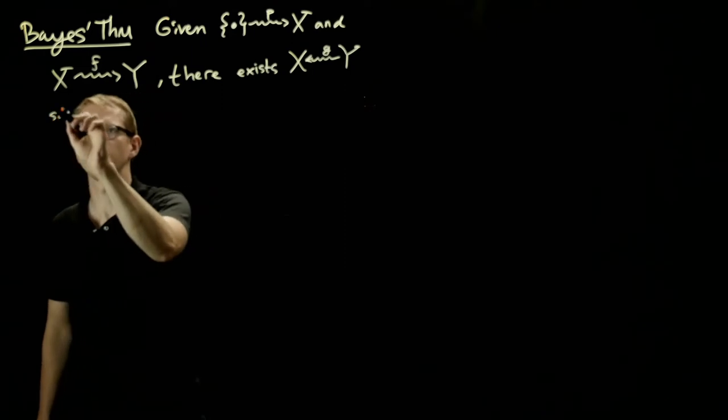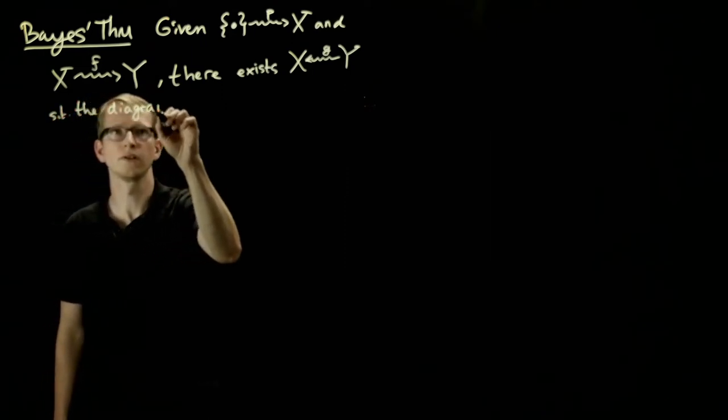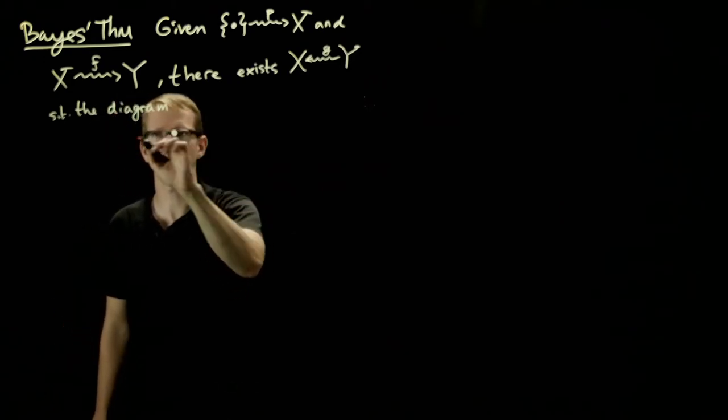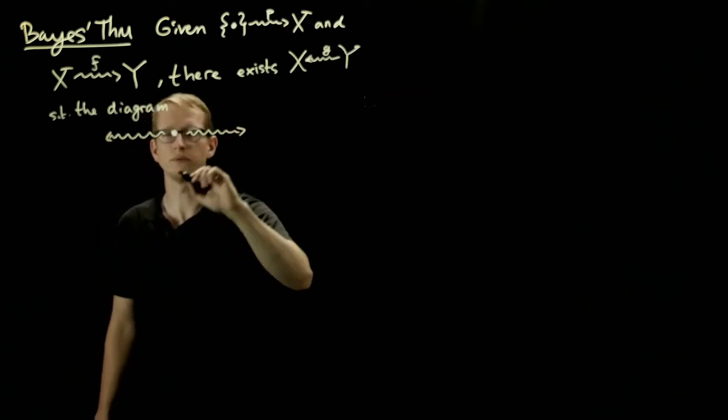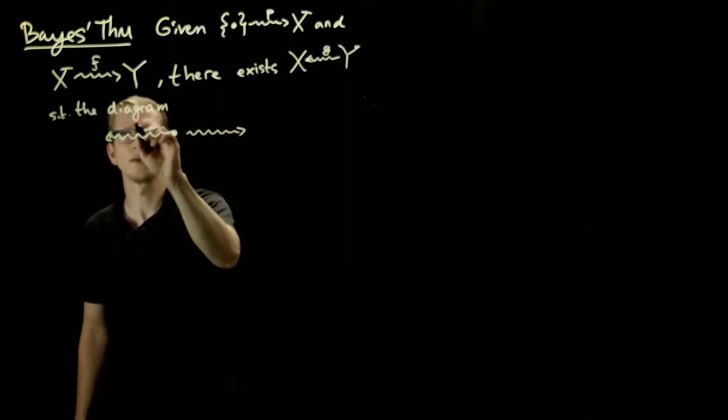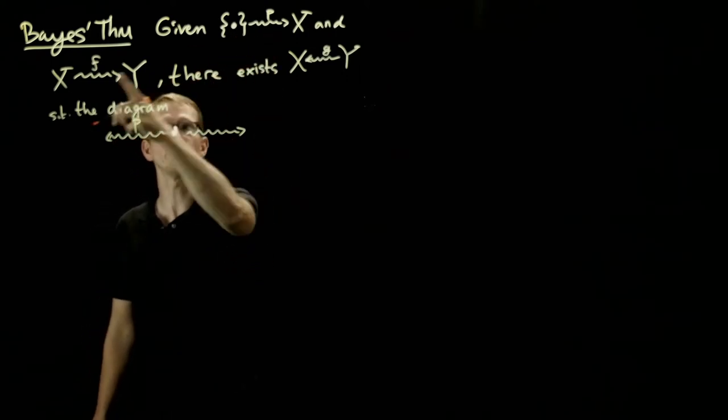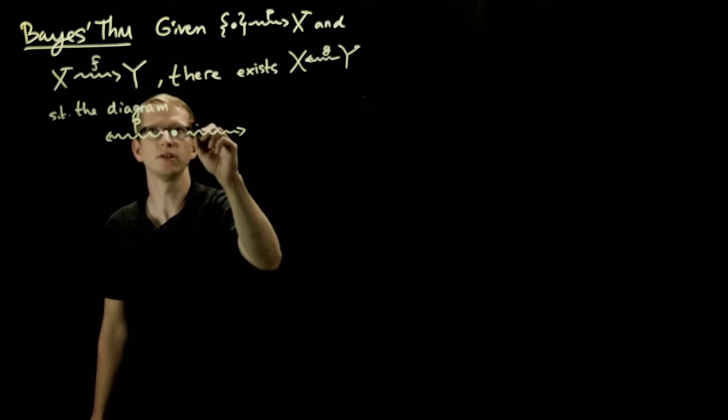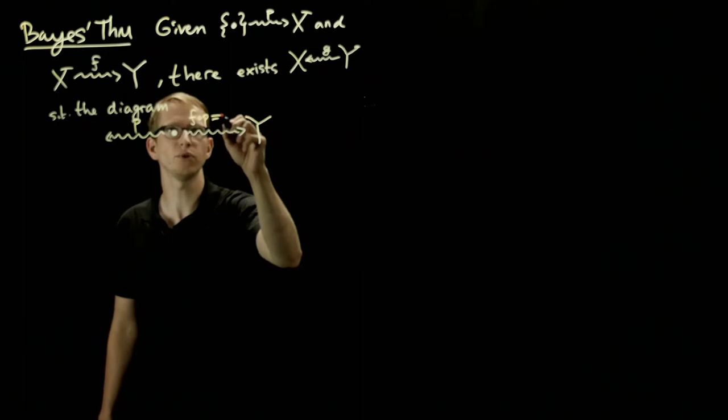Such that the diagram, now the diagram looks a little bit complicated, but it's not too bad. When we write out the equation, we'll see exactly what it means. So here we'll have p, and here notice we can compose p with f to get another probability distribution on y, and we'll call that q.